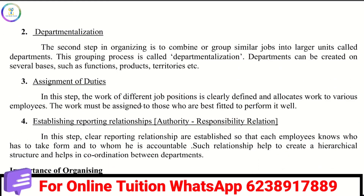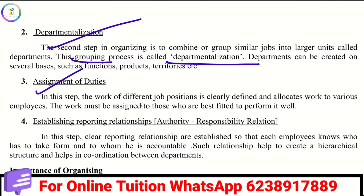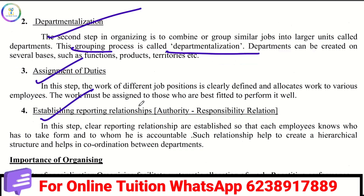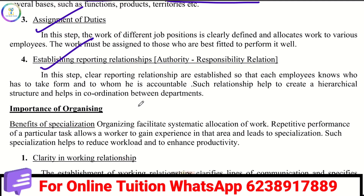The second step is departmentalization. In this step, we need to group the work together — that grouping is called departmentalization. Then we need to assign the work to each other. The third step is to assign relationships — the number of subordinates is established here.